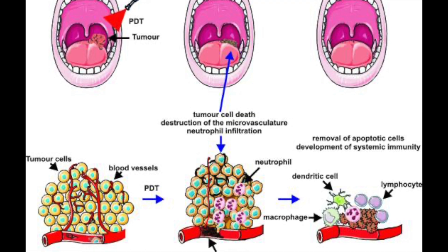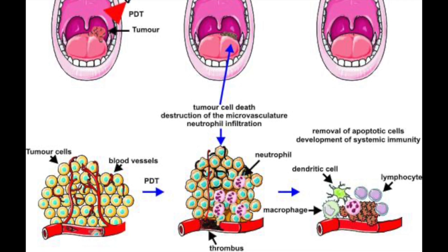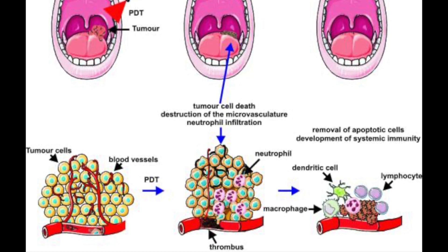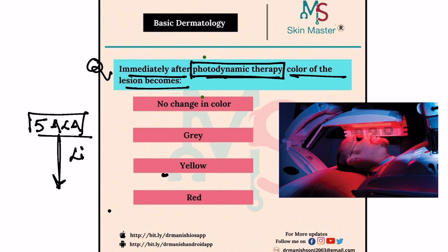For example, if you are using the photosensitizer 5-aminolevulinic acid, you apply it over the lesion and then expose the area to light.